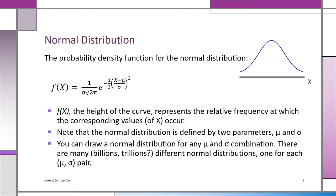For every mu and sigma combination, we have another normal distribution. Every normal distribution is characterized by a particular value of mu and a particular value of sigma. So really, there are an infinite number of normal distributions. How are we going to use one table to compute probabilities from whichever normal distribution we're interested in? We'll see that shortly.